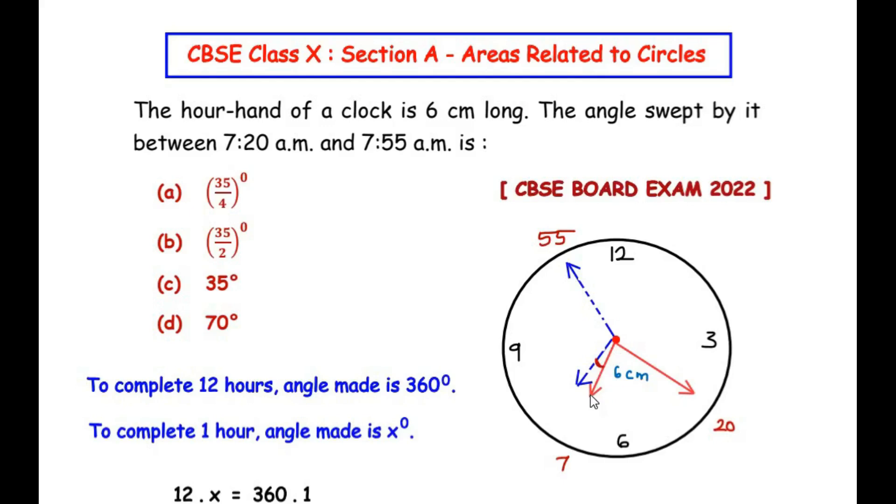For 12 hours, if the hour hand makes 360 degrees, then for one hour how much angle is it going to make? So here we have taken: to complete one hour, let the angle made by the hour hand be x degrees. Now this becomes a cross multiplication method where 12 will be multiplied with x degrees and 1 will be multiplied with 360 degrees.